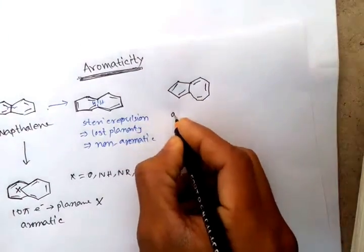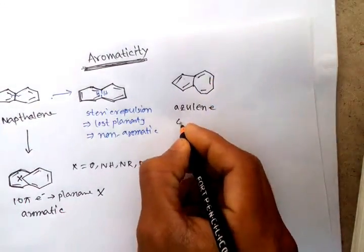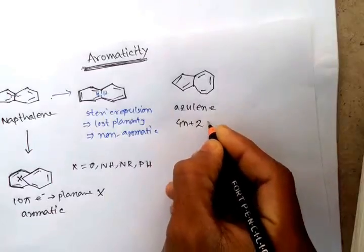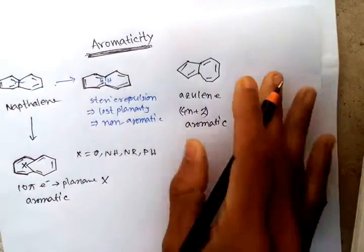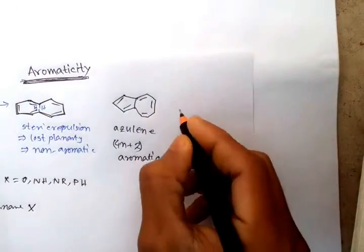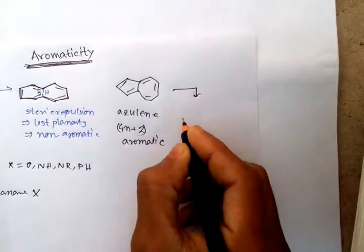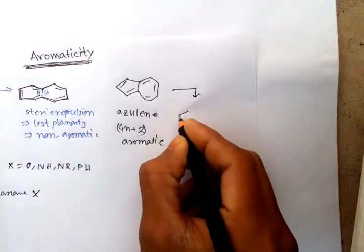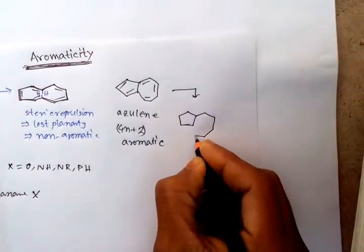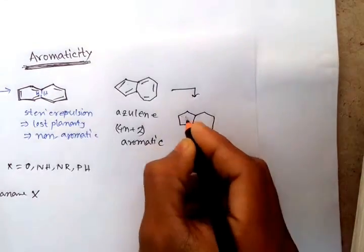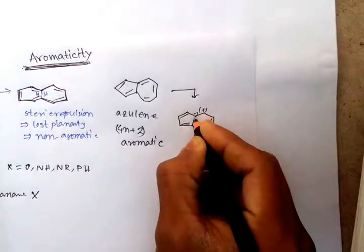This is azulene — it follows the 4n+2 number of pi electrons, so it is obviously aromatic. For understanding, it is easy if we draw the charge species — that is positive and negative.